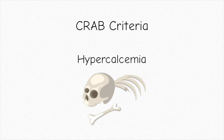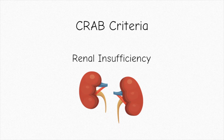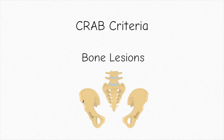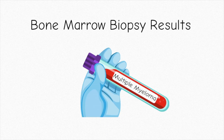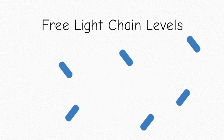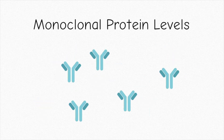First, your oncologist will look at the CRAB criteria, which includes hypercalcemia, renal insufficiency, anemia, and bone lesions. They'll also look at a bone marrow biopsy result, free light chain levels, and monoclonal protein levels.